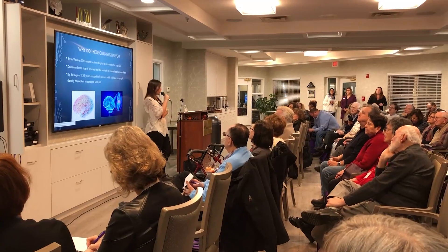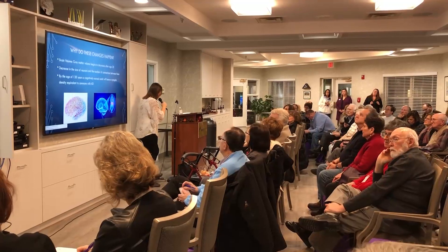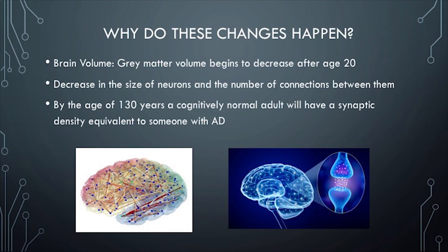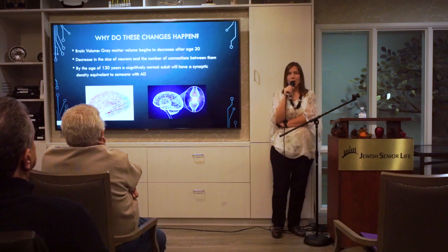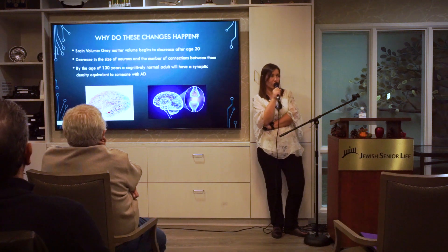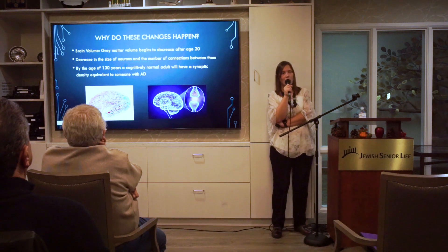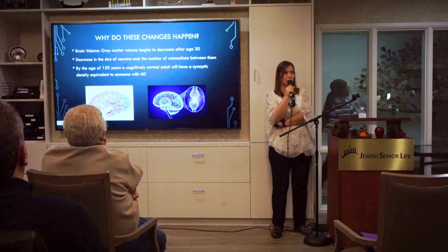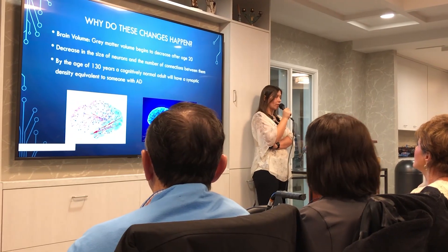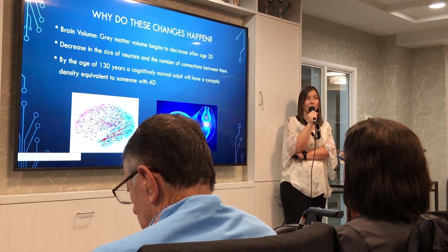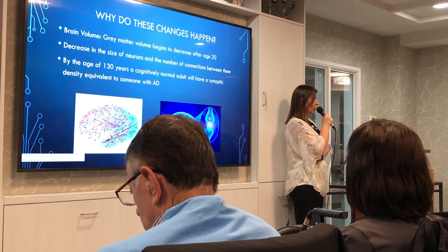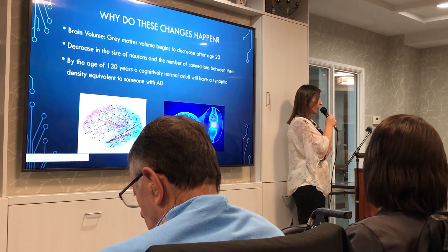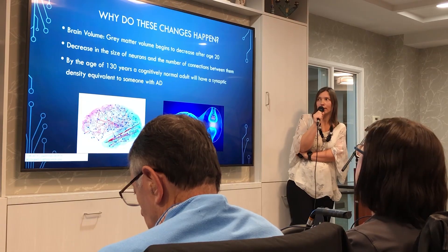Why do those changes happen? There are two theories. One is that the brain shrinks, and I'll show you a picture of that in a second. But we now think there is more to it — it's not just the volume of the brain, it's how well it functions, specifically how many synapses we have. A working synapse is where one neuron meets another and they talk to each other. Without those connections, the volume of the brain doesn't matter.